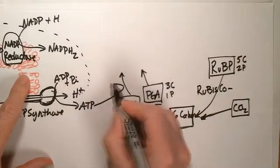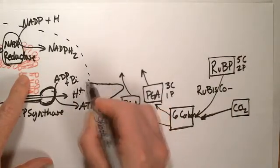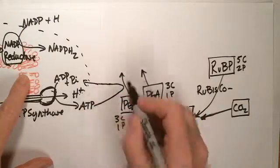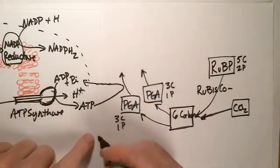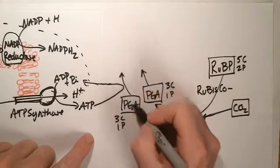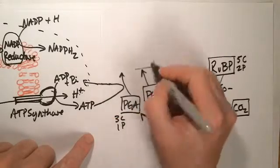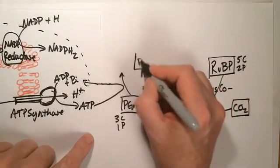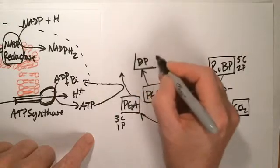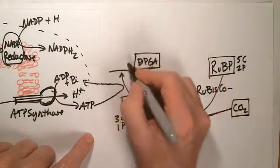And the ATP then will work on this PGA, and it'll do it on both. And I'm just not going to put them to both because I don't want it being confusing. But it phosphorylates this PGA, and so that we get a new molecule called DPGA, or diphosphoglyceric acid.